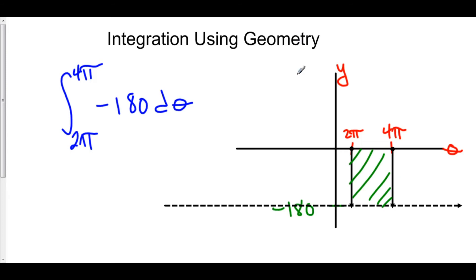Well, we know how to find the area of a rectangle. The area of a rectangle is the base, which here is 4π minus 2π. That's a difference of 2π. And our height, which here is negative 180.